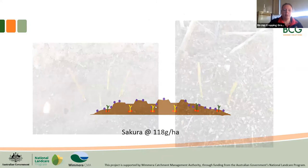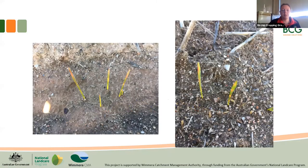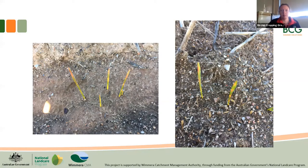In the end we deemed there was enough establishment to have a trial, however we did see very characteristic stripes — colloquially known as 'footy socks' — which indicates plants struggling to come up from depth. The pinkish colouring also indicates some herbicide damage.